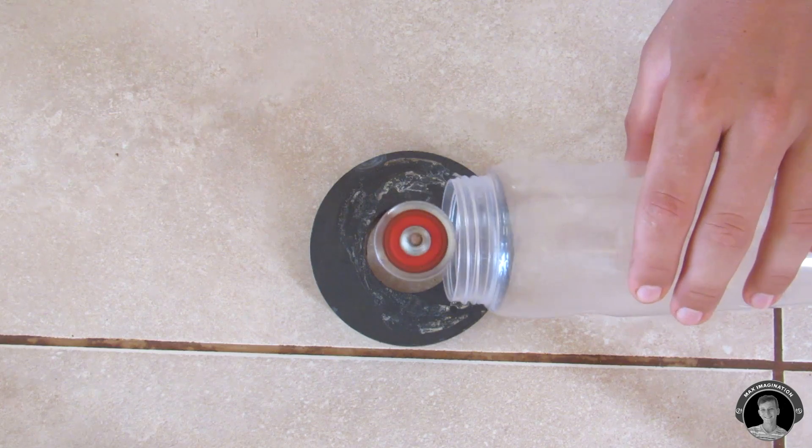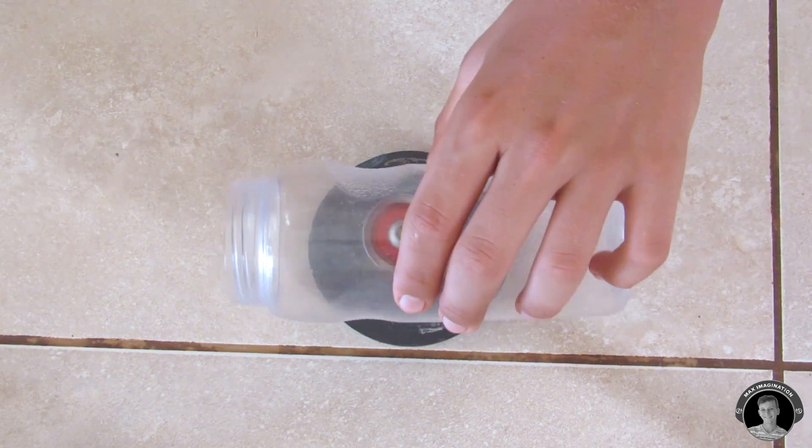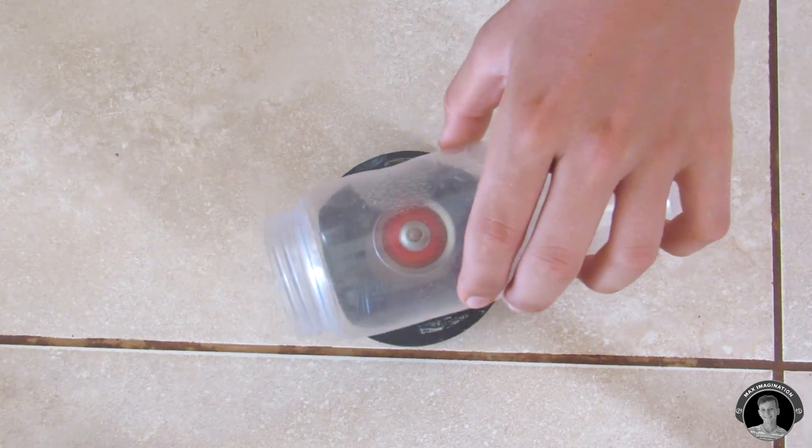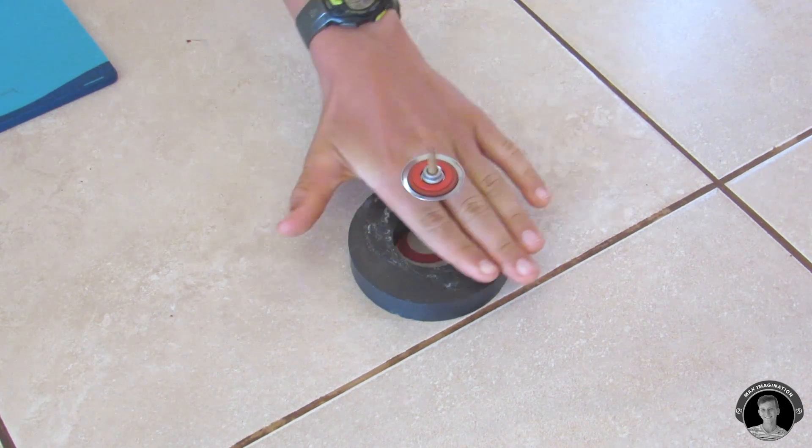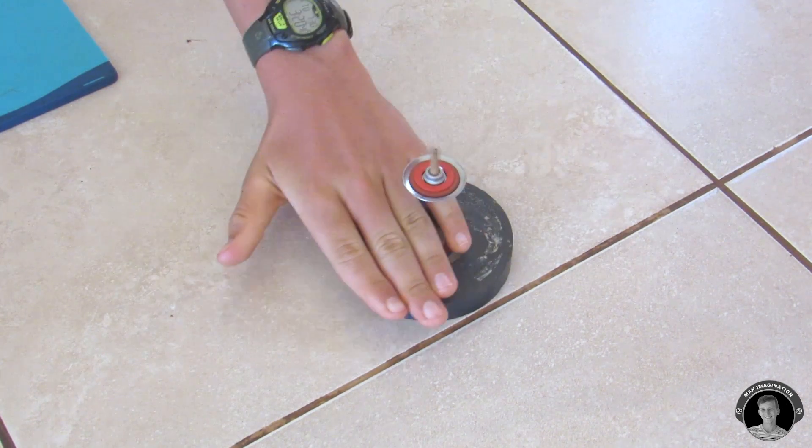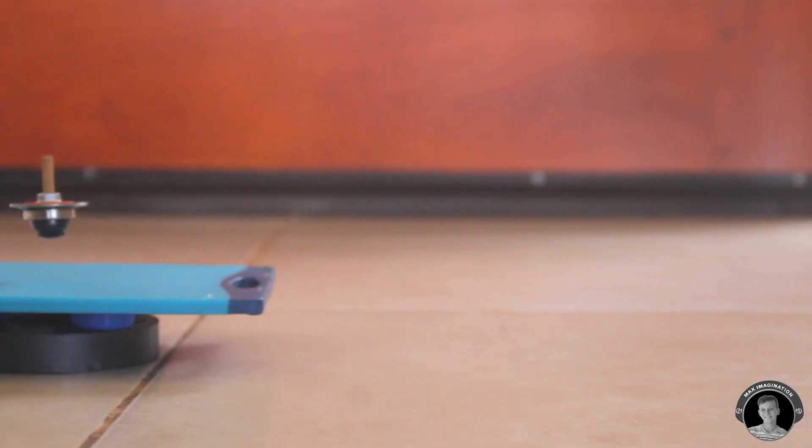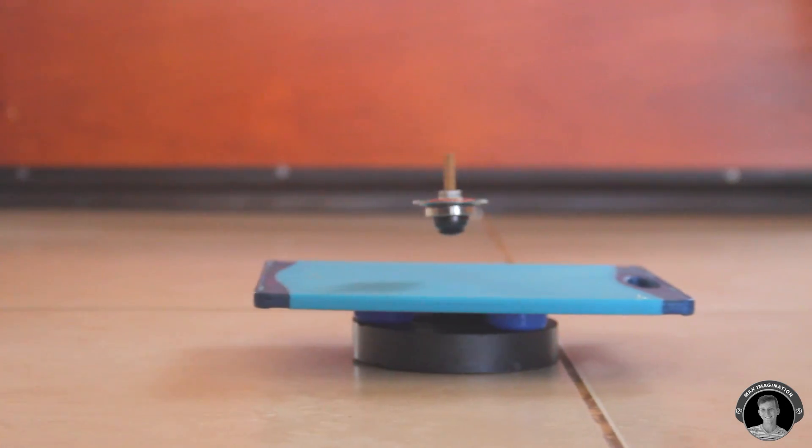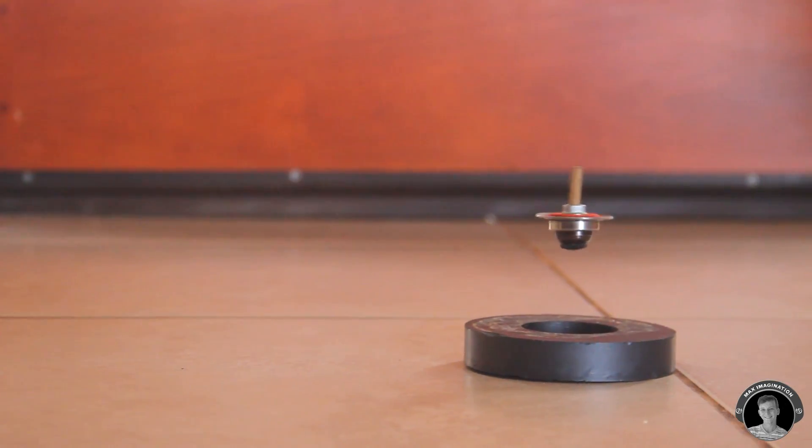But what actually keeps it there in the center is also the hole in the base magnet. It's very important that your magnet has a hole. And also what keeps it in position is that it has the perfect amount of weight, so it basically doesn't fly off the base or doesn't land down on the base magnet, only after a while when it stops spinning.